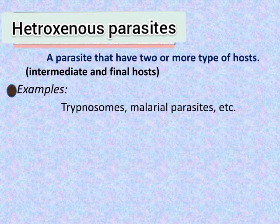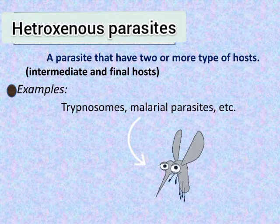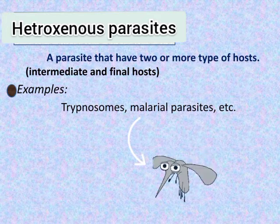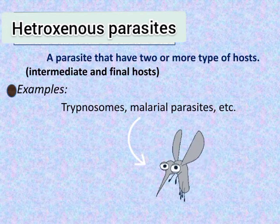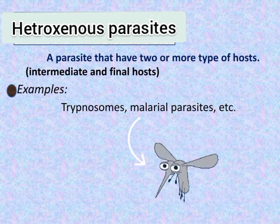Heteroxenous parasites have more than two types of host, including intermediate and final hosts. Examples include trypanosomes and malarial parasites.